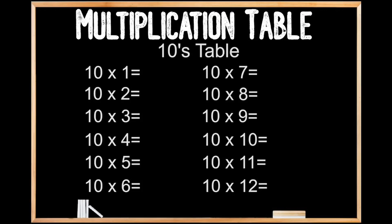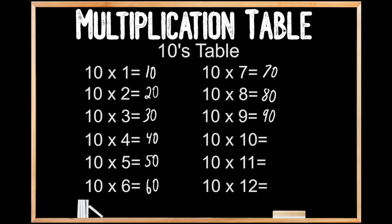10's table. 10 x 1 is 10. 10 x 2 is 20. 10 x 3 is 30. 10 x 4 is 40. 10 x 5 is 50. 10 x 6 is 60. 10 x 7 is 70. 10 x 8 is 80. 10 x 9 is 90. 10 x 10 is 100. 10 x 11 is 110. And 10 x 12 is 120.